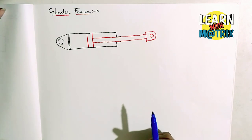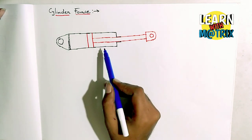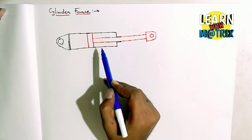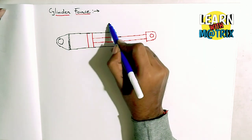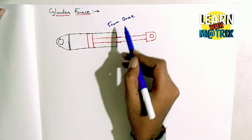Hello friends, today we are going to know how to find out cylinder force. Here we are showing a cylinder. Cylinders are generally available by their bore size, so we are taking a 15 mm bore size.